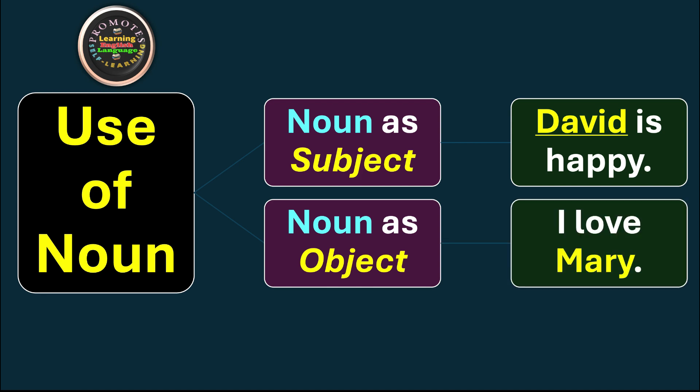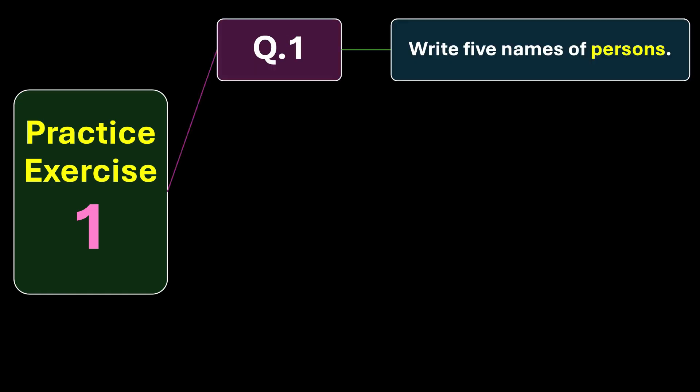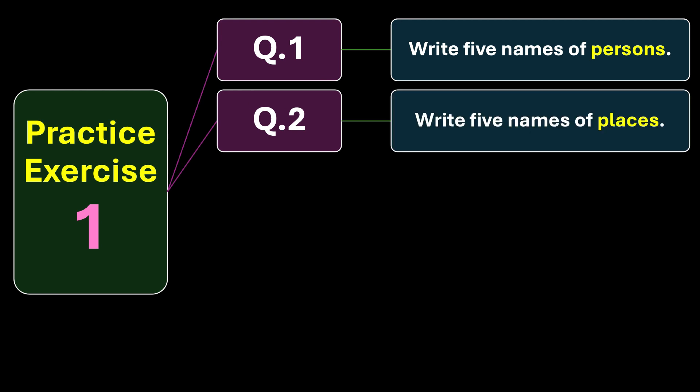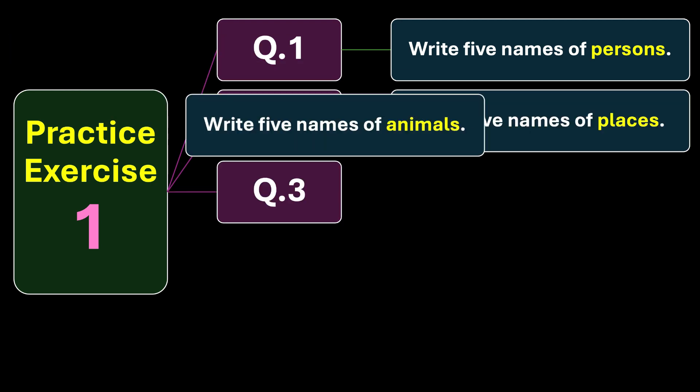Practice exercise one. Question number one: write five names of persons. Question number two: write five names of places that you know. Question number three: write five names of animals that you know.